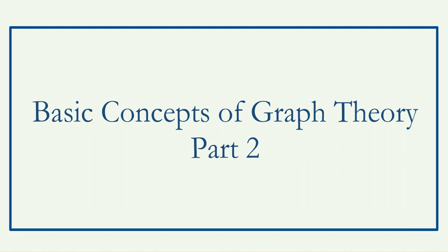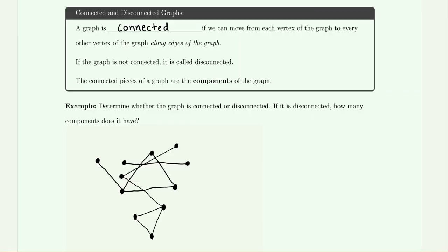In this video we're going to continue our lecture on the basic concepts of graph theory from part two. Our next definition is that a graph is said to be connected if you could move from each vertex on the graph to any other vertex along its edges. Consider this example: we are asked whether this graph is connected or disconnected, and if it's disconnected, we need to identify exactly how many connected components it has.